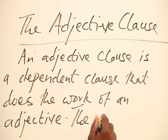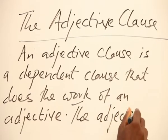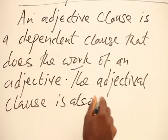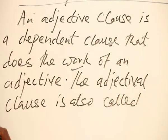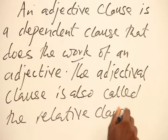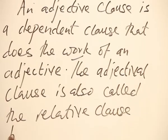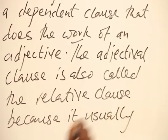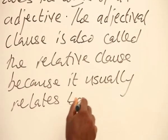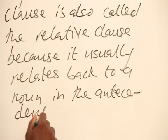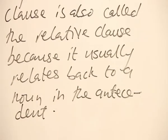Now, the Adjective Clause is also called the Relative Clause, as it can be called the Relative Clause because it relates back to the Adjective Clause.